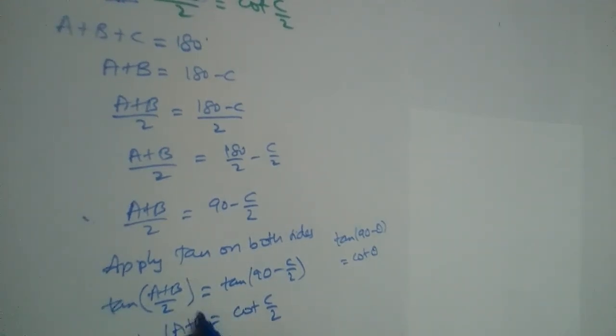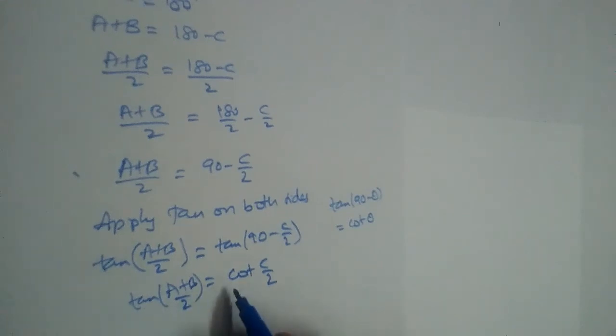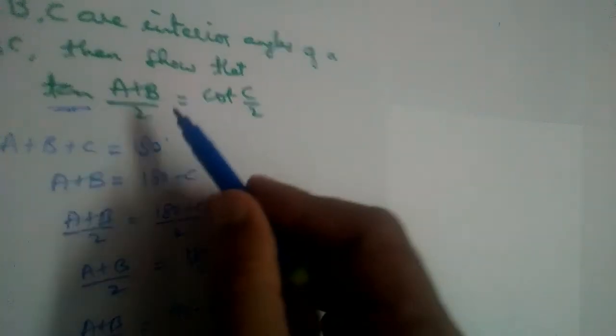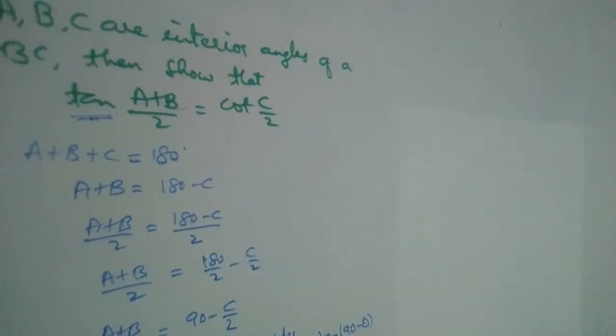On LHS we have tan((A+B)/2) is equal to cot(C/2). This is what we needed to prove: tan((A+B)/2) is equal to cot(C/2).